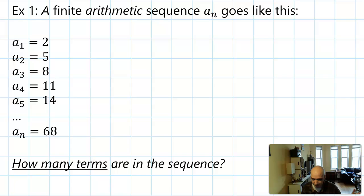We'll get to the formal definition in a minute, but let's lead with an example. A finite arithmetic sequence a_n goes like this: the first term is 2, the second term is 5, the third term is 8, the fourth term is 11, the fifth term is 14, and the nth term is 68. How many terms are in this sequence?